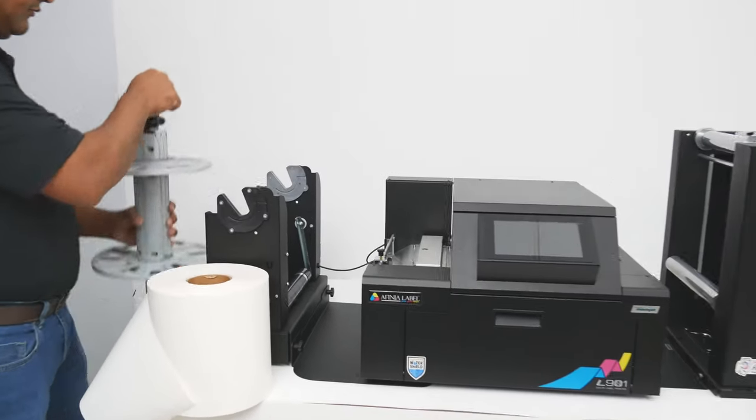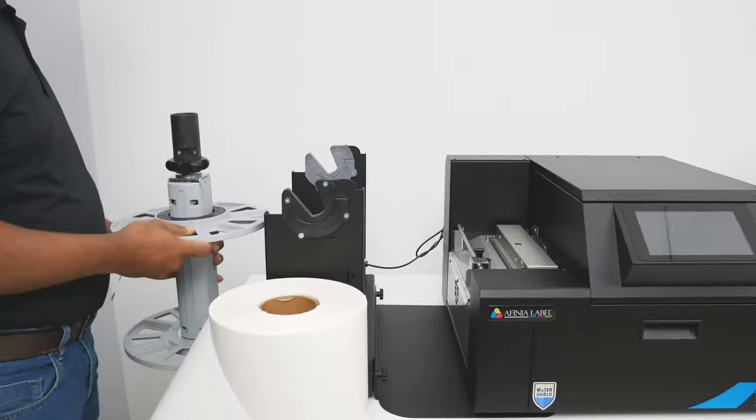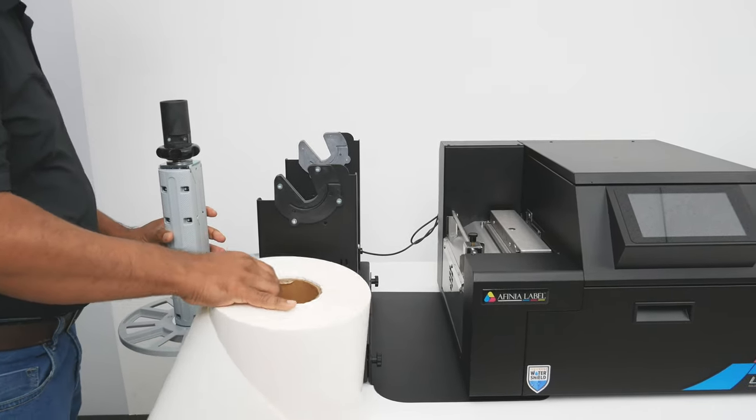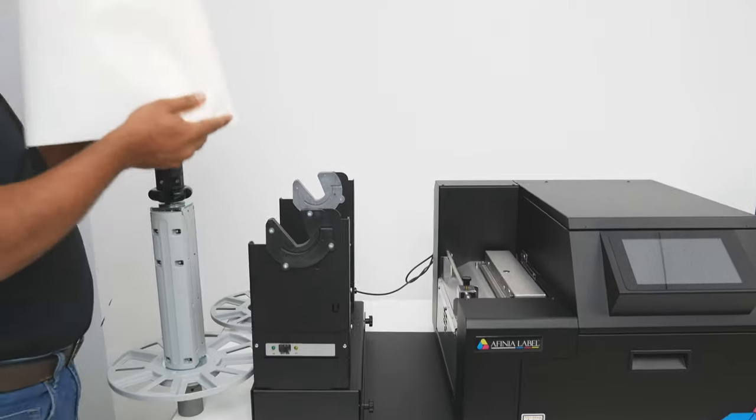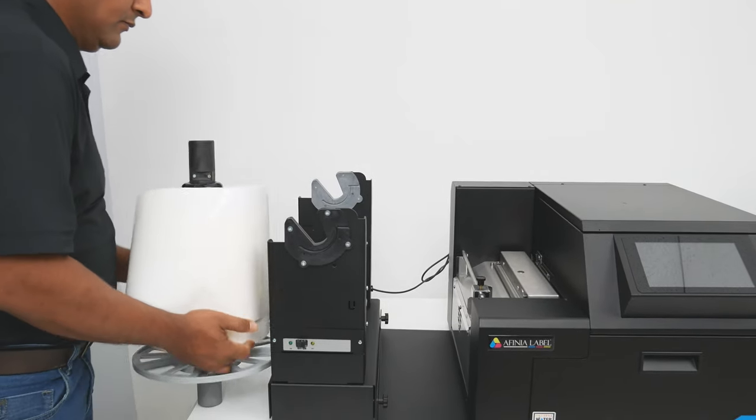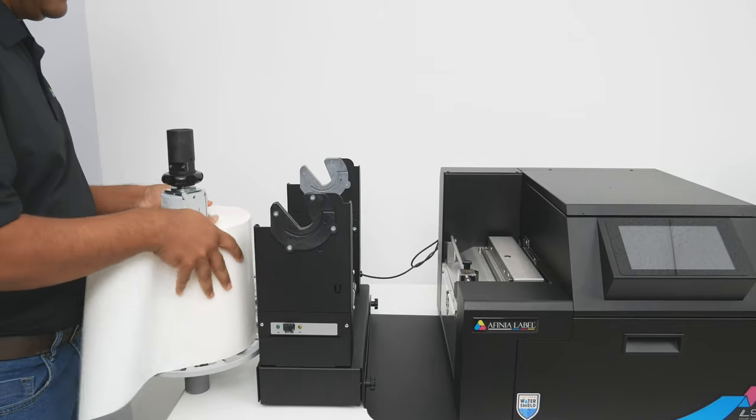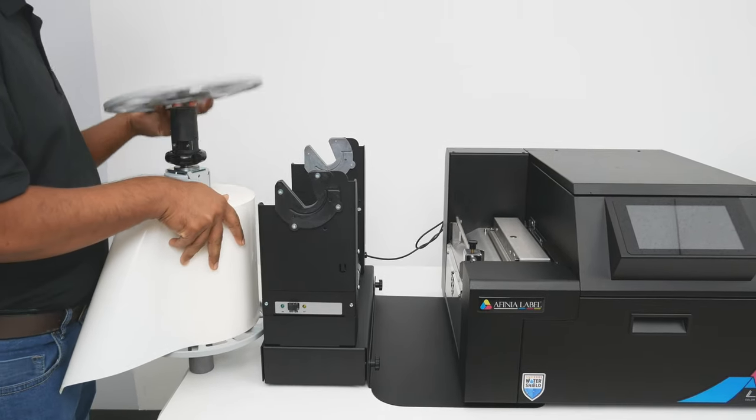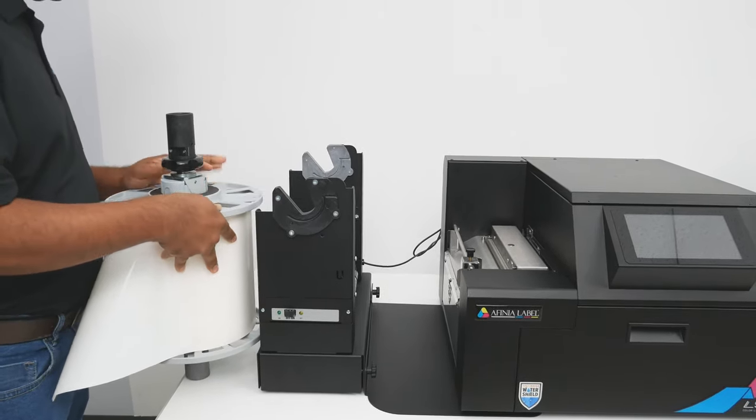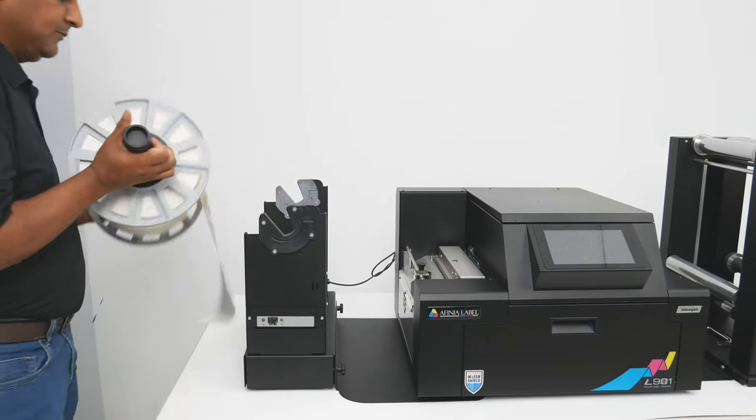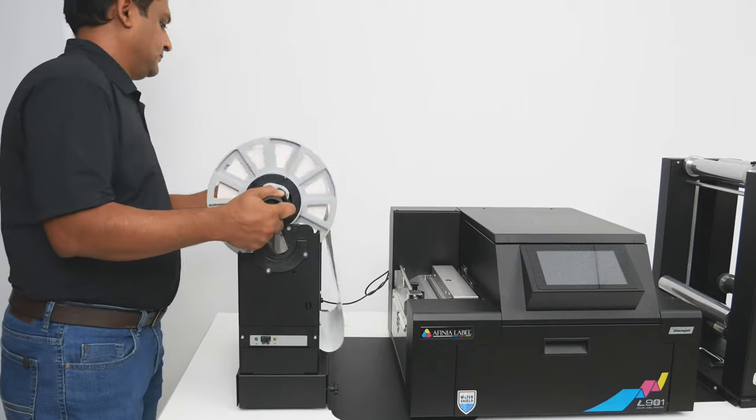First, we'll load the unwinder with a blank roll. This unwinder allows up to a 10-inch outside diameter roll. Maximum length will vary based on the material thickness. Load the media onto the mandrel, place the outside disc on top and tighten the knob. We'll place the mandrel on the unwinder, making sure it seats firmly.